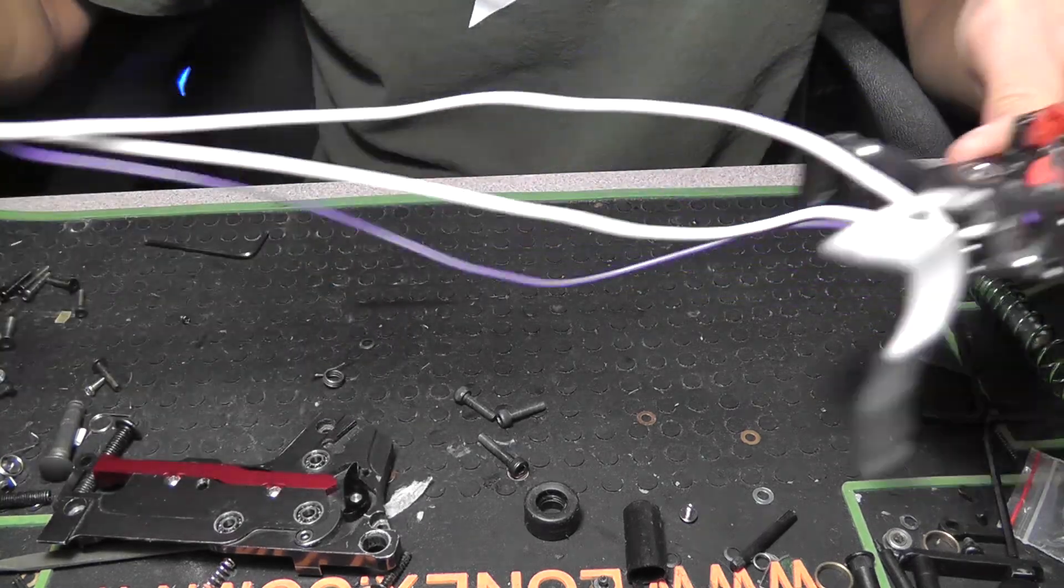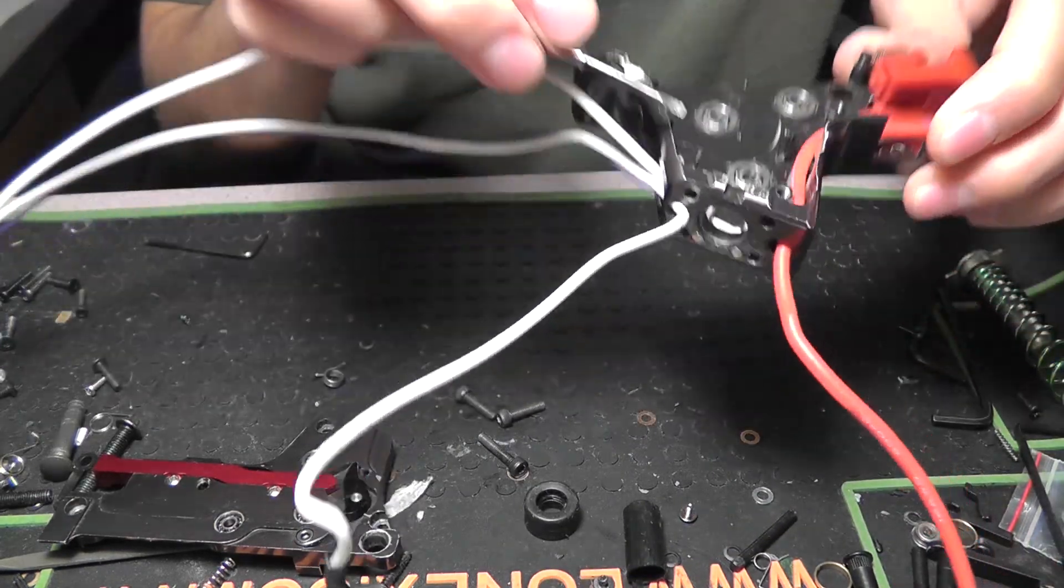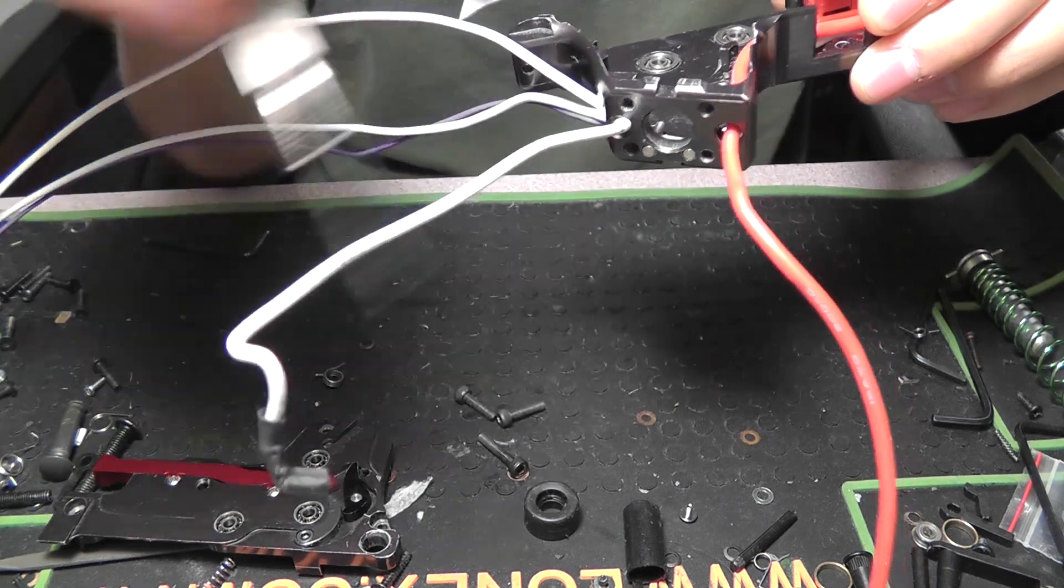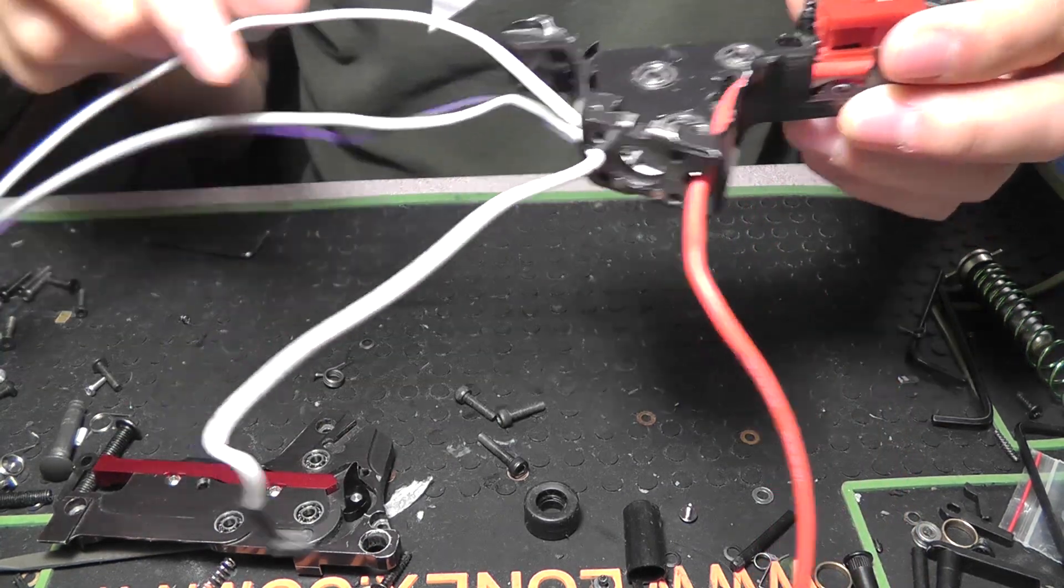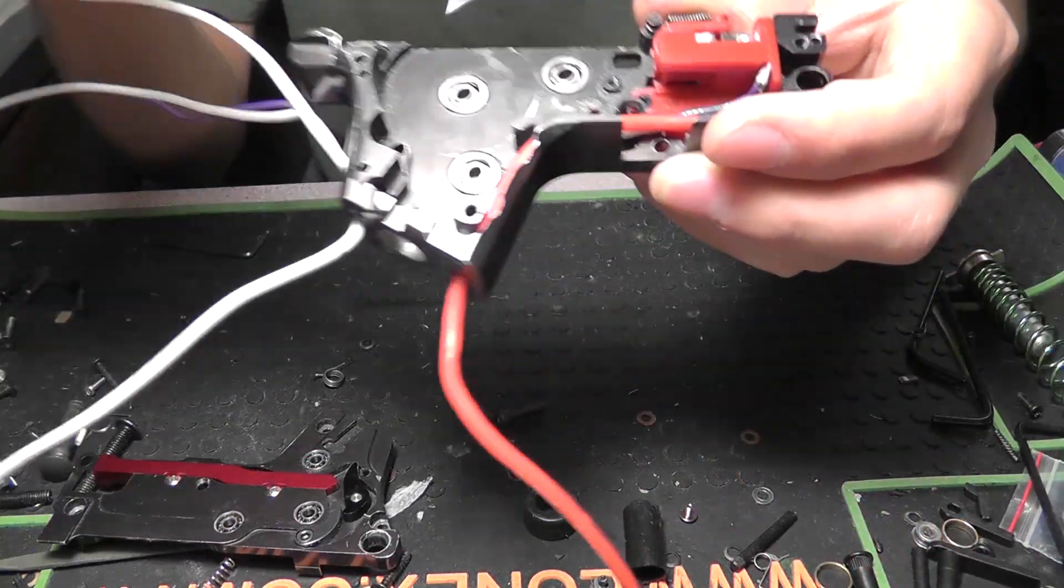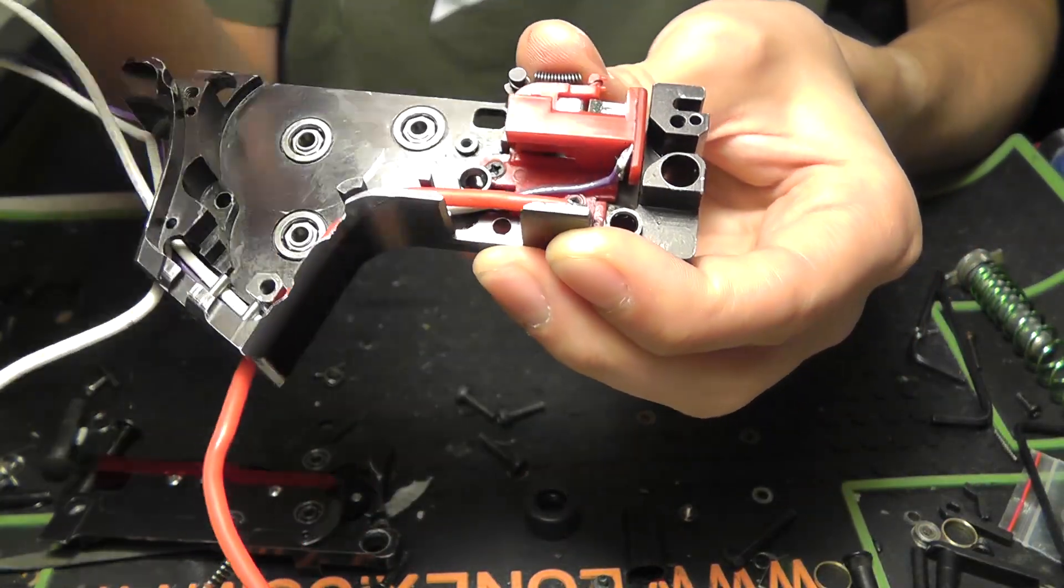The negative wire on the MOSFET heading to the side that has three wires gets sent down straight to the motor. That's going to be one of the wires right there. The other positive wire - so the other wire that comes pre-wired into the MOSFET, that positive wire heads into the trigger contacts.